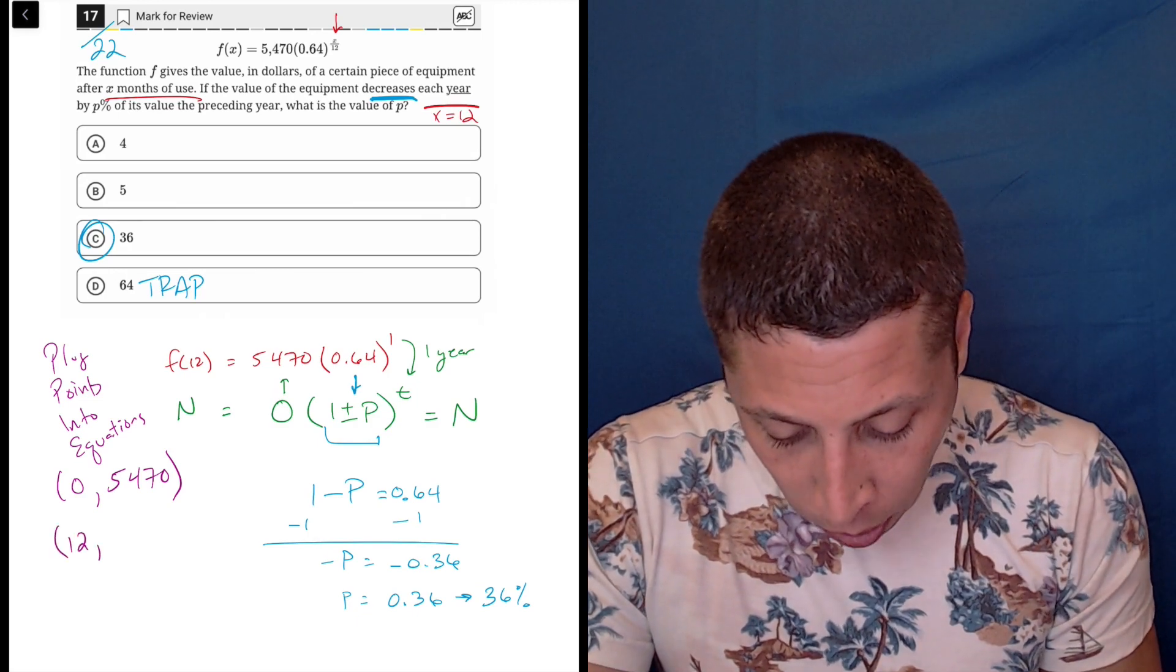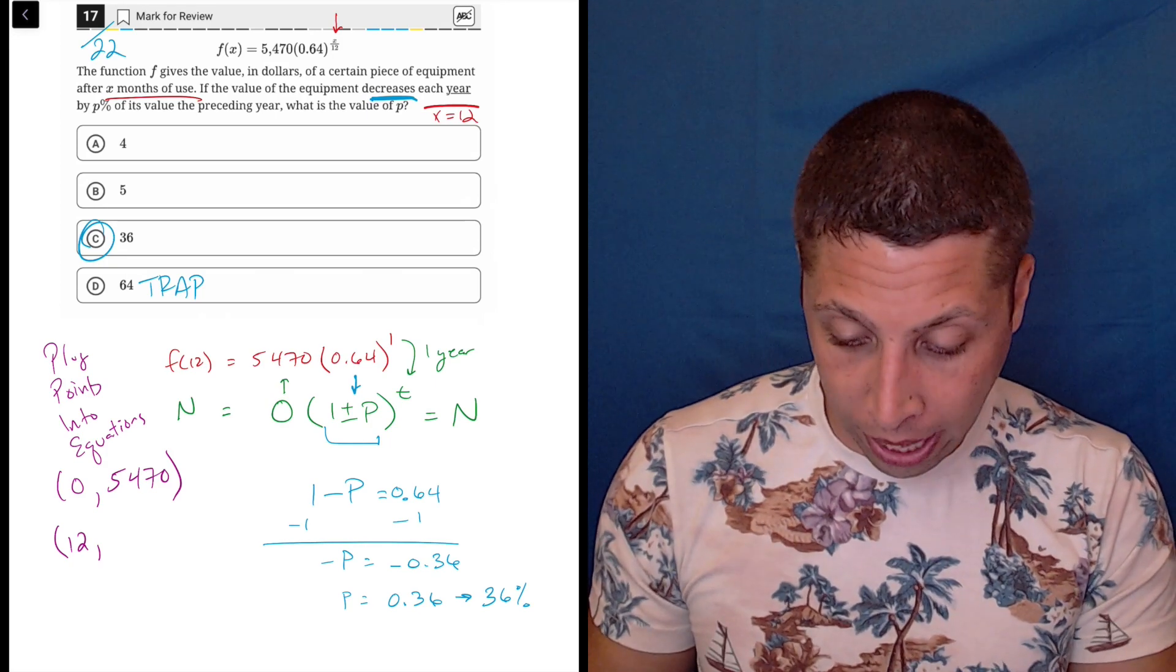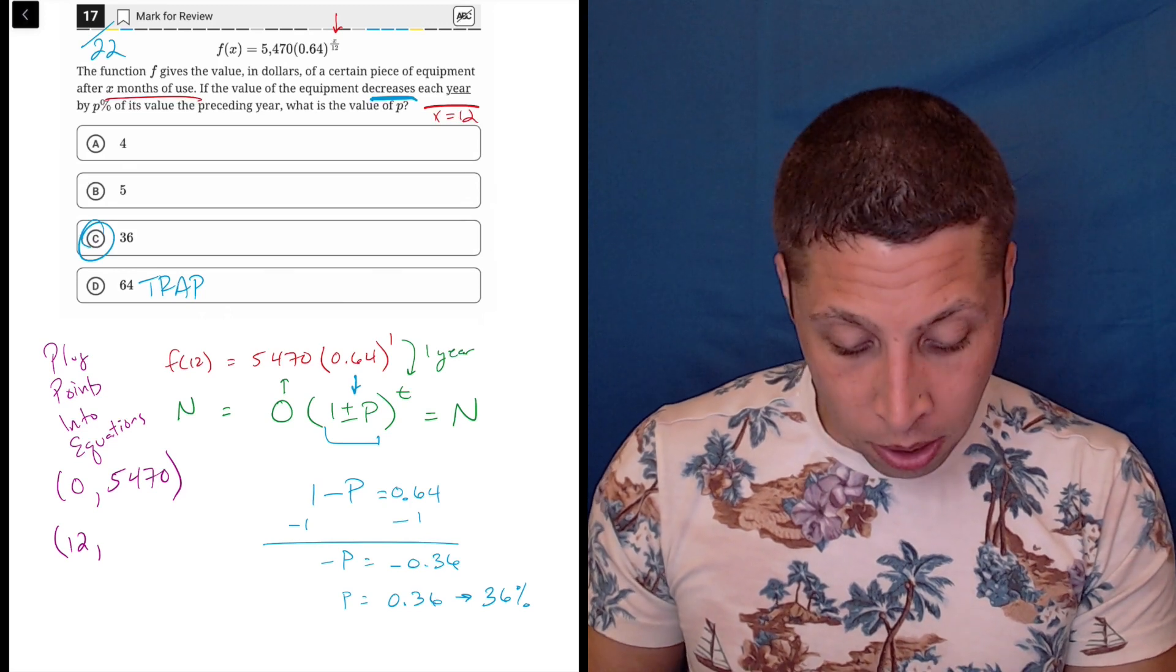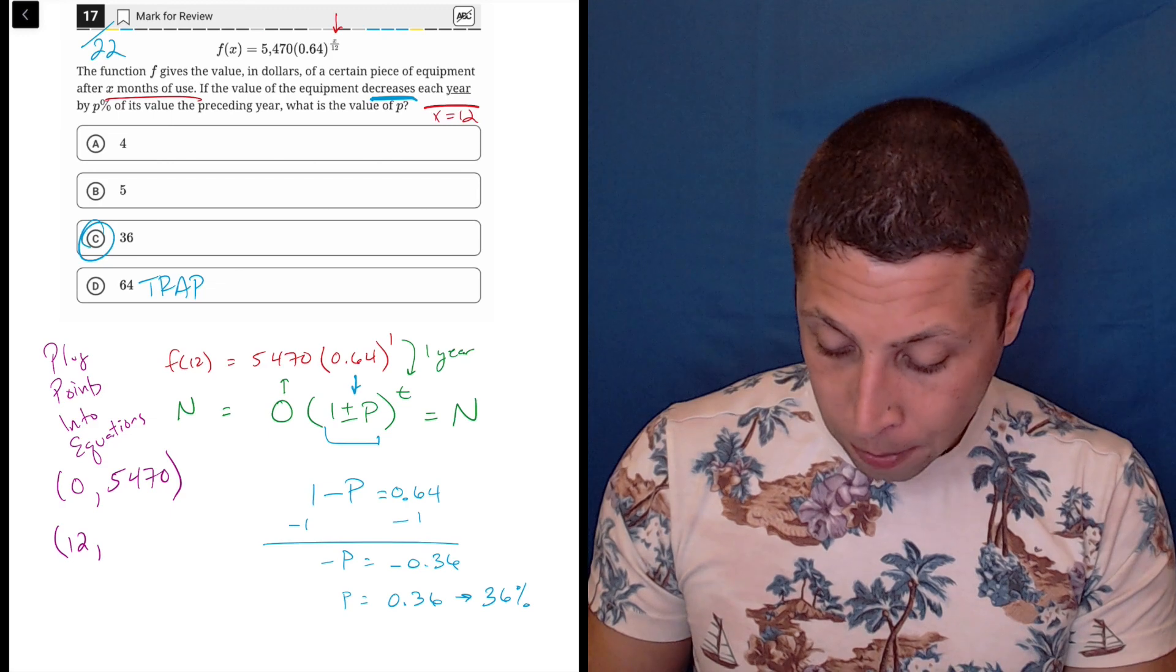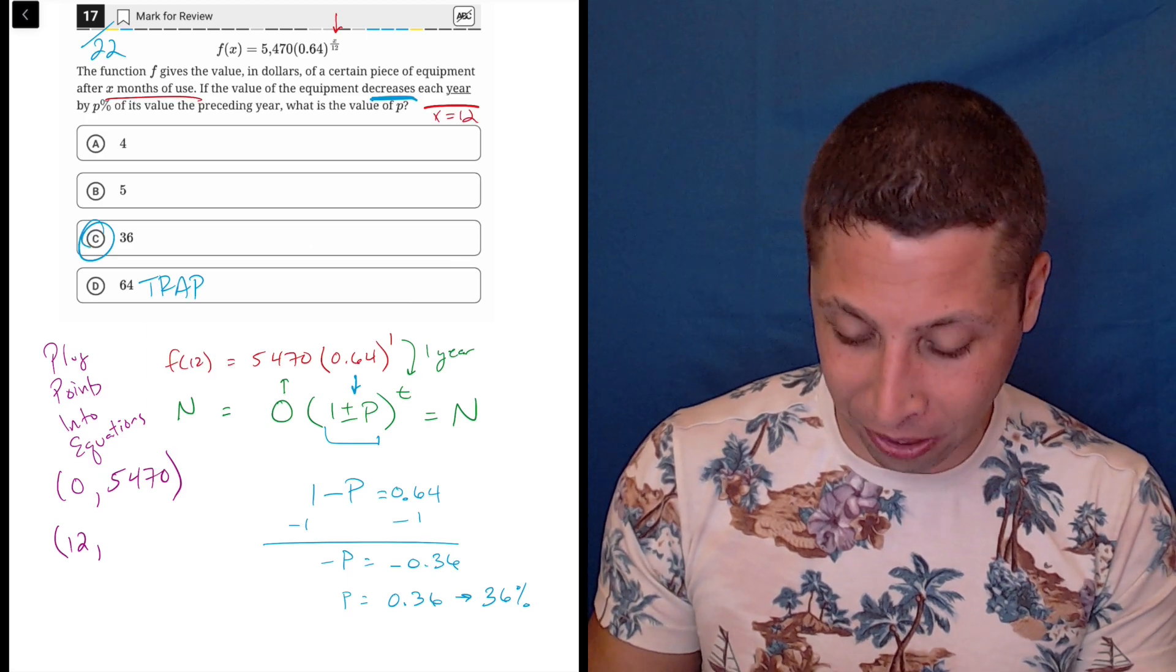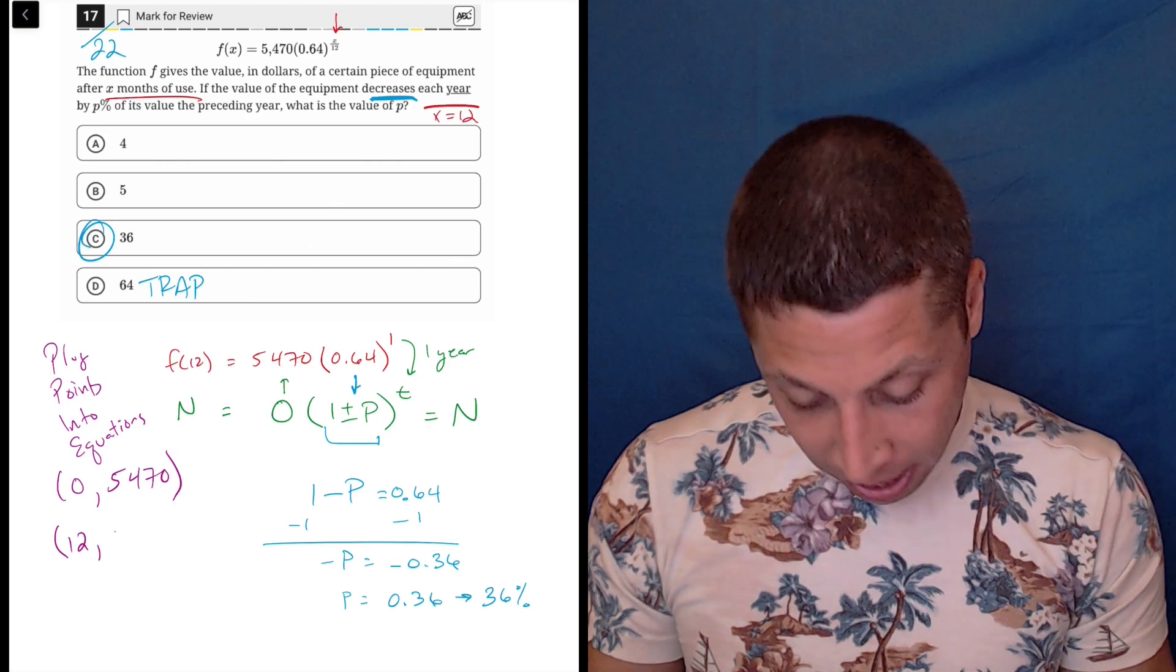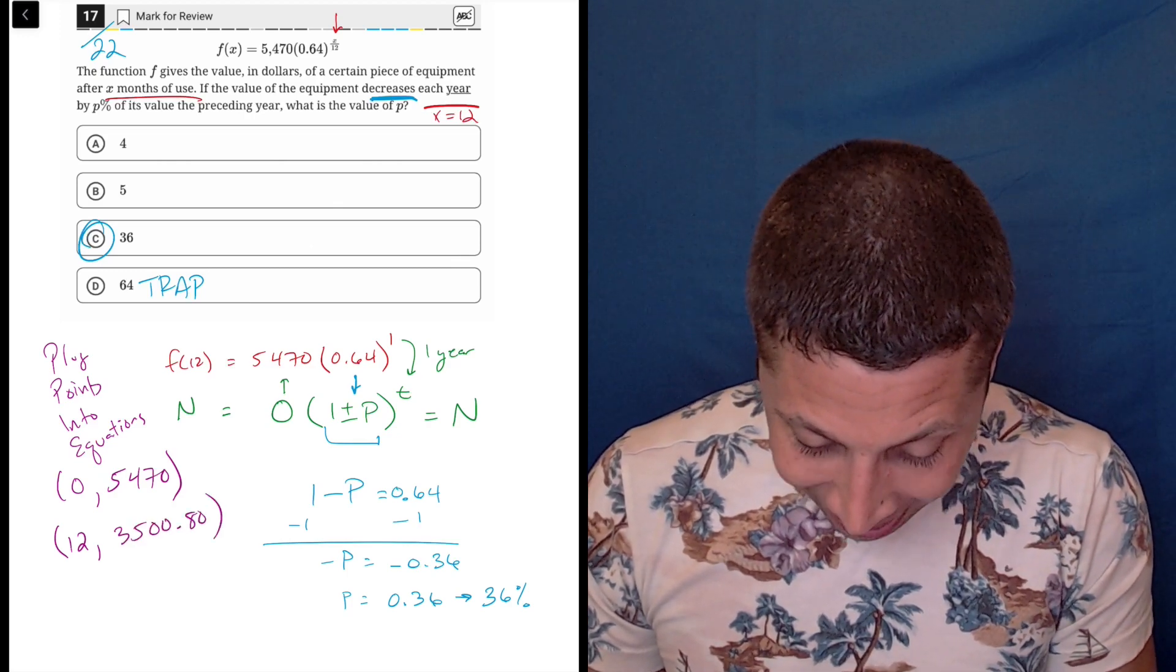Then after a year goes by, 12 months, we would just plug that in. And now I could use the calculator. So I'd have 12 over 12 is 1. So 0.64 to the first. So 0.64 times 5,470 is 3,500.80.